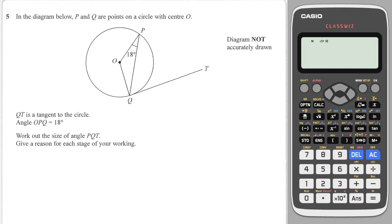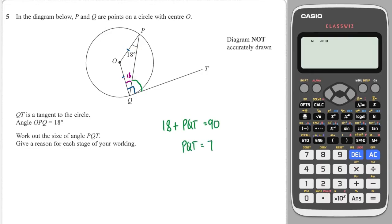We're given a radius and a tangent, so straight away we know that angle is 90 degrees. We also know that these are both radii, which makes this an isosceles triangle, so this angle in here is also 18°. It's asking us to work out angle PQT — so the green angle plus the purple angle equals 90°. So 18 + PQT = 90, therefore PQT = 72°.